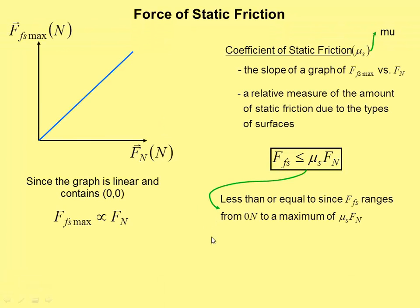So that little less than or equal to is because static friction actually ranges from zero to a maximum. The maximum amount of static friction is mu_s times the normal force.